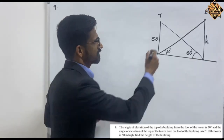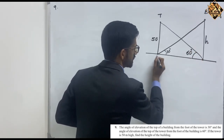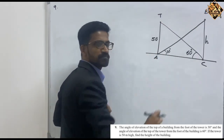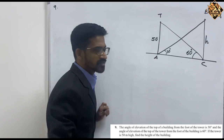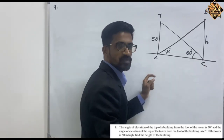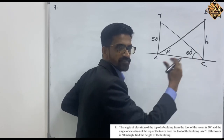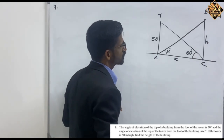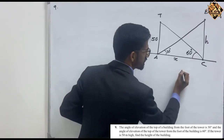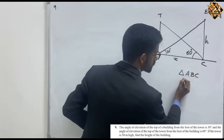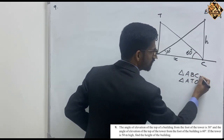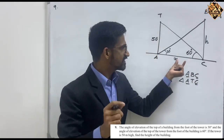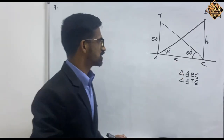We will draw a tower and a building. In this figure, we can name it as: let ABC be one triangle and the other triangle is ATC. We have two triangles where for both triangles AC is a common side. The length of AC is not given, so we will take AC as X — the common side for both triangles — so that we can equate both equations.